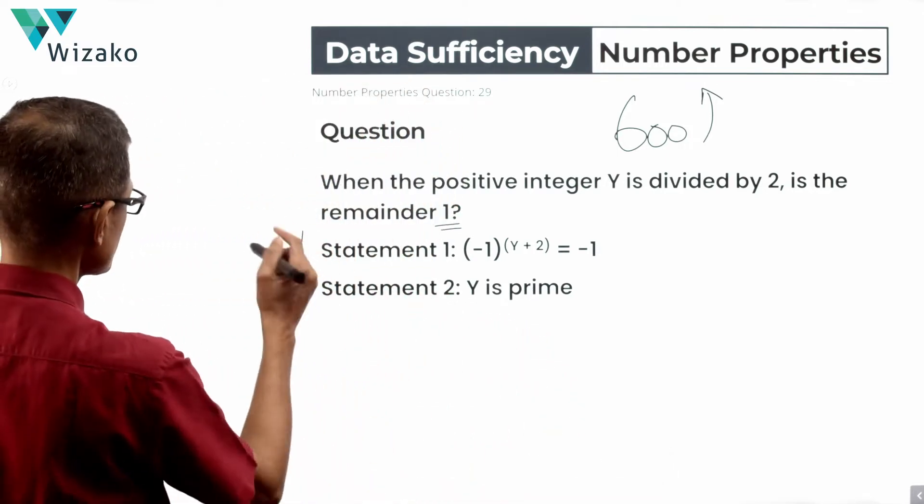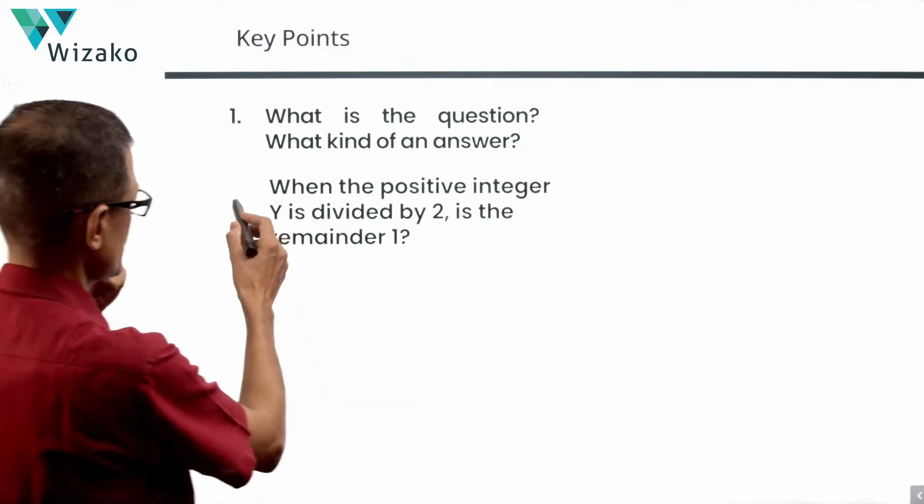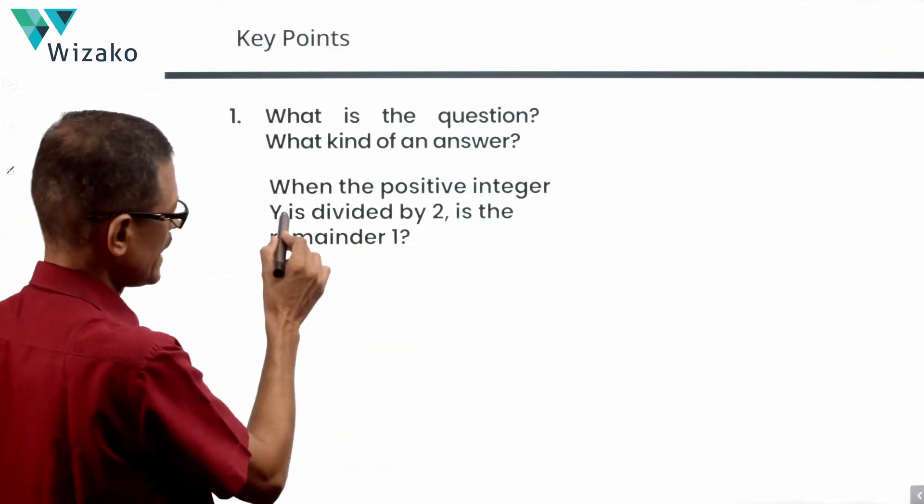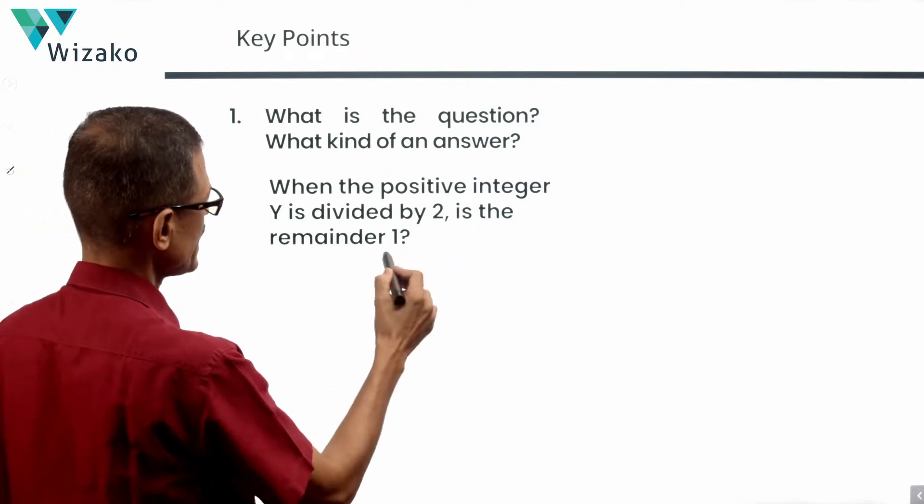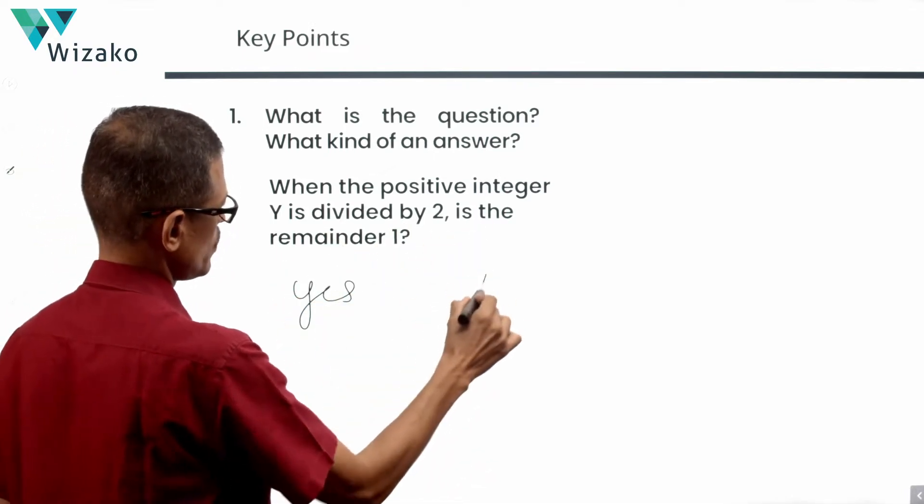Let's get started. These are the two statements. Let's look at the statements in a while. Five answer options. We'll come to the question. When the positive integer Y is divided by 2, is the remainder 1? It's an is question, so the answer should be yes or no.